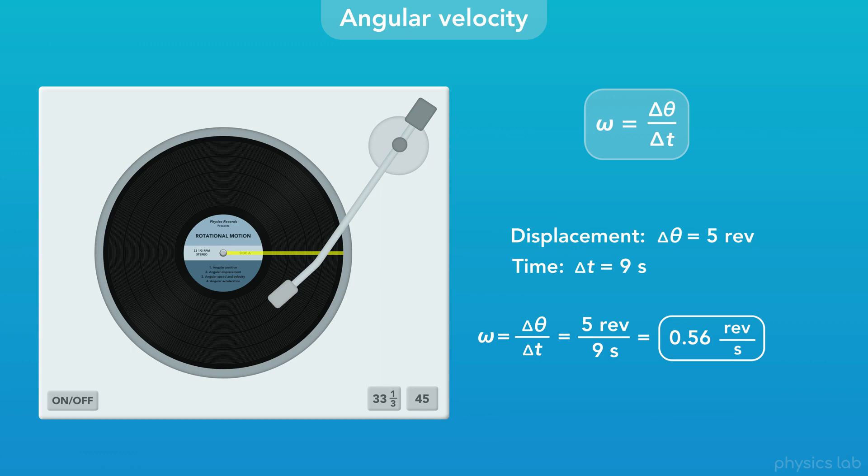But let's convert that into a more common unit. If we take 5 revolutions divided by 9 seconds and multiply it by the unit relationship of 60 seconds per 1 minute, then we can cancel out the units of seconds on the top and bottom. We can multiply the fractions, then we get 33 and a third revolutions per minute.